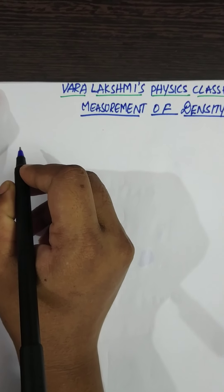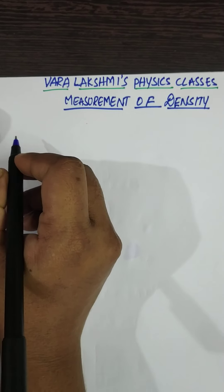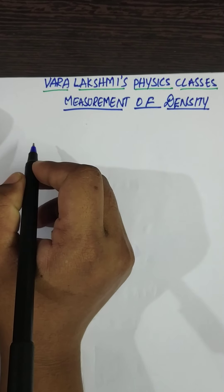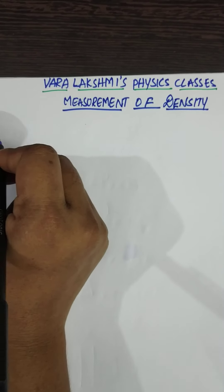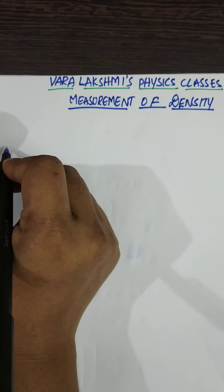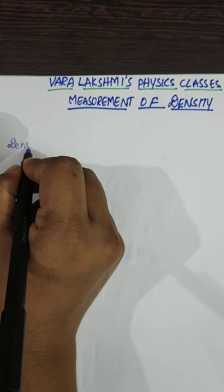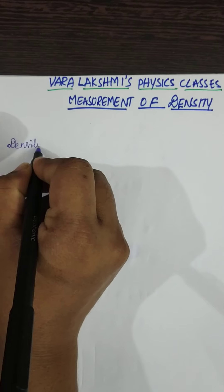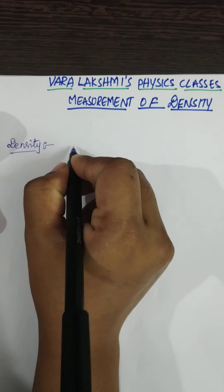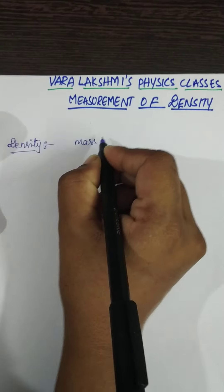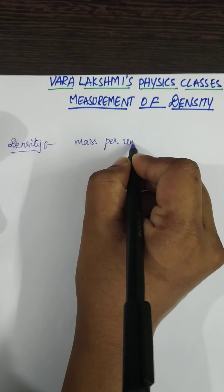Hi friends, welcome to Lakshmi's Physics Classes. In this video we are going to know about density measurement. The definition of density is mass per unit volume of a substance.